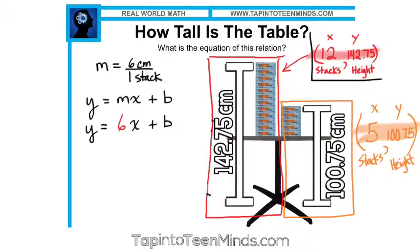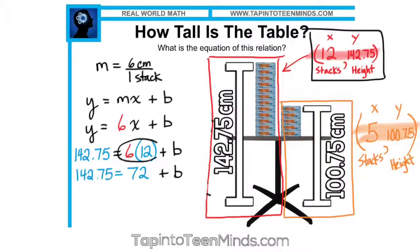So in this case, I'm going to use this point, however, you could also use any point on the line, including the one below. And now that we've subbed in 12 for x for our 12 stacks, and the total height of the table in the 12 stacks of 142.75, we can now isolate for b our y-intercept, or in this case, more specifically, the height of our table. So doing some quick math, 6 times 12 is 72, and now we'll isolate b by doing opposite operations and subtracting 72 to get b and a 0 here, which is equal to 70.75. So you can see that we do have the same initial value, which is our table height.